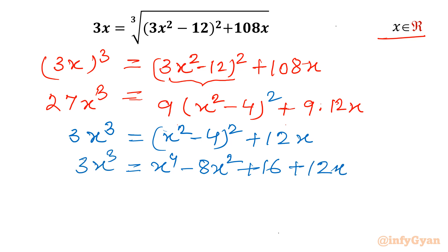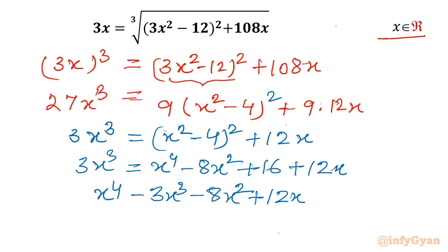Moving all terms to the right hand side, I will write: x⁴ minus 3x³ minus 8x² plus 12x plus 16, equal to 0.